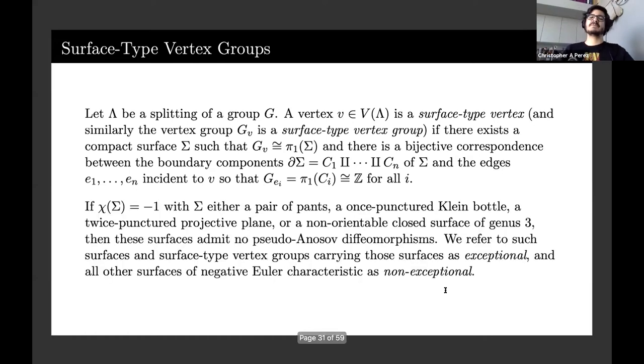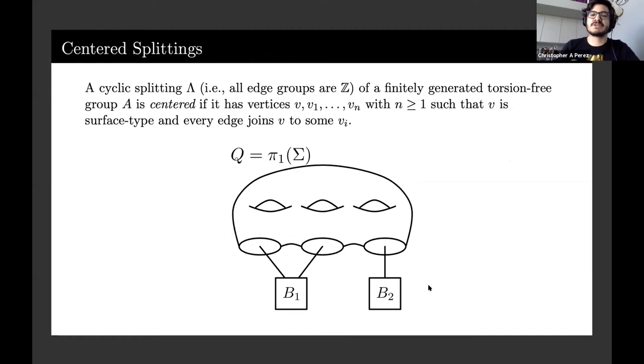I'm gonna have a picture of what one of these would look like on the next page. Because I'm only dealing with things with negative Euler characteristic, the things of Euler characteristic negative one that don't have pseudo-Anosov diffeomorphism are referred to as exceptional, and the other surfaces of negative Euler characteristic are non-exceptional. This is a picture of what a surface type vertex would look like. We have the fundamental group of a surface and we've just attached, using amalgamated free products and HNN extensions, this surface to some other space, which is a K(G,1) of this lower vertex.